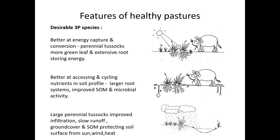Why do those desirable 3P pasture species perform so much better? They're better at capturing energy — the solar panels, our leaves on our plant systems — with much more green leaf on those large perennial tussocks and extensive root systems for storing energy. They're much better at accessing and cycling nutrients in the soil profile with their larger root systems, improving soil organic matter and microbial activity. Those large 3P grass species also have improved infiltration through roots and pores, which helps slow runoff, maintain ground cover levels and protect our soil surface from exposure to the sun, wind and heat.